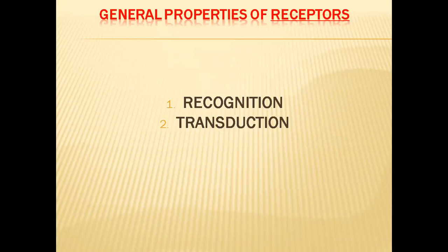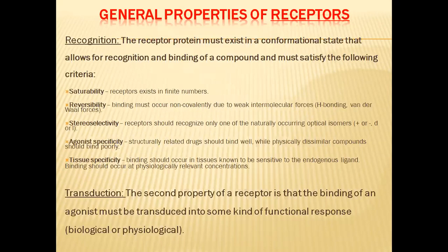Coming to the general properties or characteristics of receptors: any receptor definitely should possess two characteristics. One is recognition, and the second one is transduction. Recognizing the stimulus is the first character, and the recognized stimulus must be transducted or transmitted further. These are the two general properties of receptors.